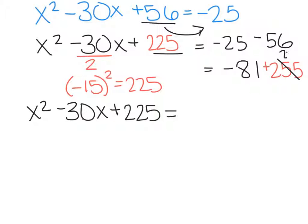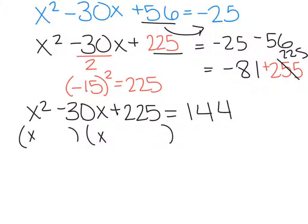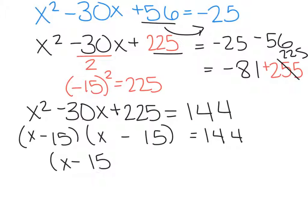I wrote that wrong — so that would give us 144. So now we need to factor this out. Factors of 225 we know are 15 and 15, which can also get us to 30. So I'm going to put 15 and 15 and make them both negative. Since these are both the same, I could rewrite it as x minus 15 squared, because there's two of them.